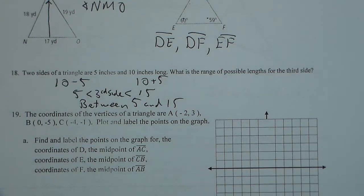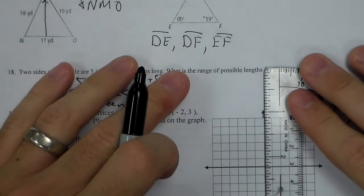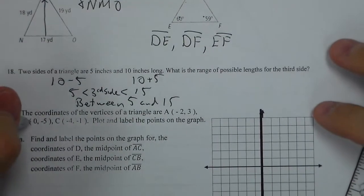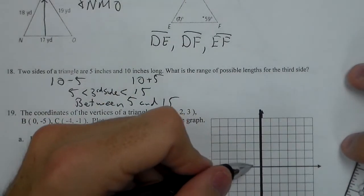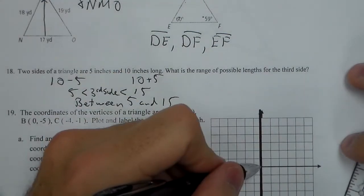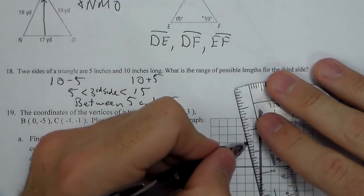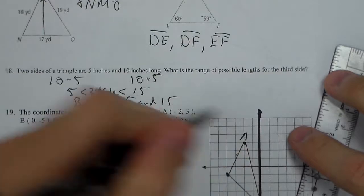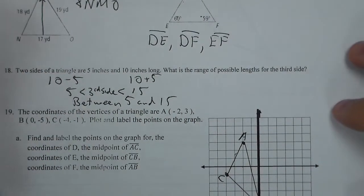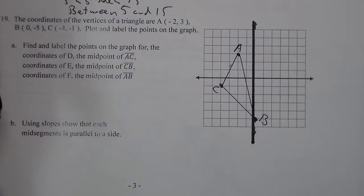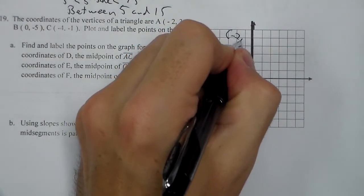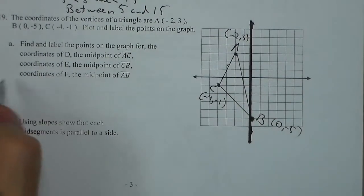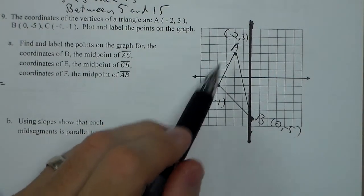Now for 19, I'm going to fix my axis here. We have 0, negative 5. We have negative 4, negative 1, and negative 2, 3. So this gives us our triangle. We have A, B, C. So we need to first find the midpoints for each of them. So the midpoint D for AC, I'm going to put their coordinates just there so I can see them easier. Now to find the midpoint of, let's start with AC. That's going to be D. I'm going to add the x's divided by 2, add the y's divided by 2 within these two points. So that's going to be negative 2 plus negative 4 over 2, and 3 plus negative 1 over 2.